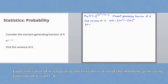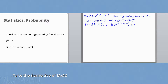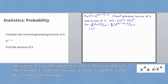The expected value of x is equal to the first derivative of the moment generating function evaluated at t equals 0, which is equal to the derivative of e to the power of 2e to the power of t plus 7t minus 2, with t equals 0. Take the derivative of the exponent 2e to the power of t plus 7t minus 2. The derivative of that is 2e to the t plus 7, and put that in front of e.